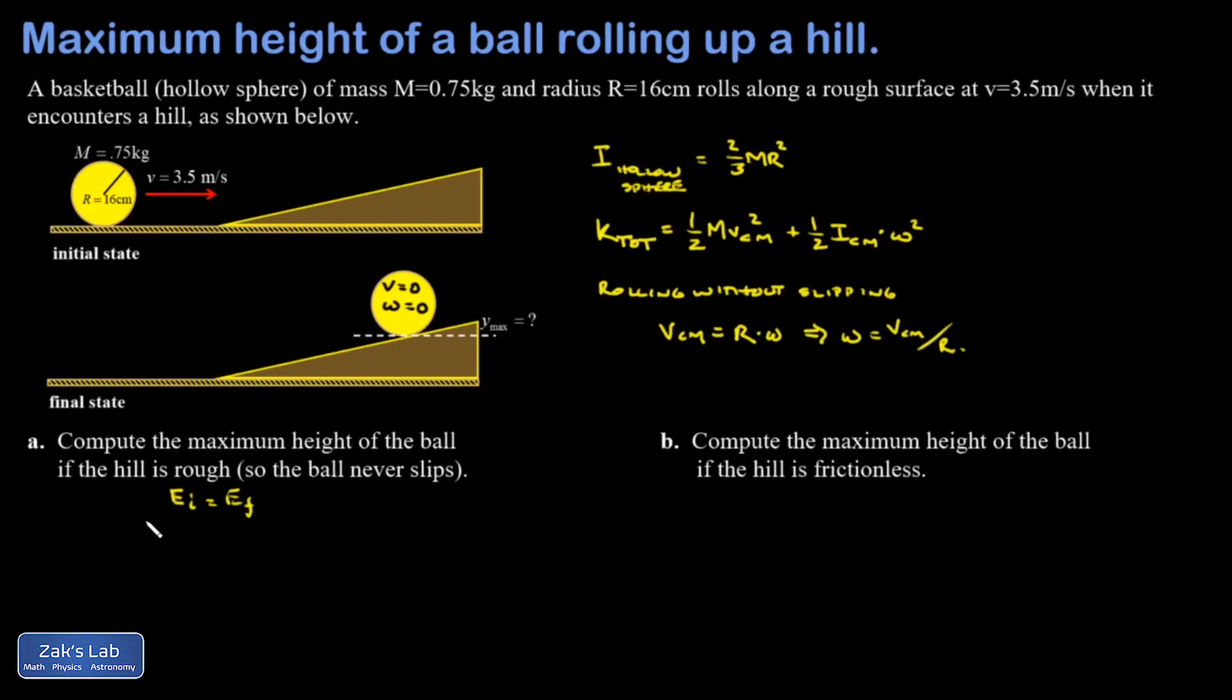My original energy is one half m times the center of mass velocity squared plus one half moment of inertia about the center of mass times omega squared. All of that has been turned into gravitational potential energy. There's no more motion in the final state, not rotational or translational. So that's going to be mg times what I call y max in the diagram.